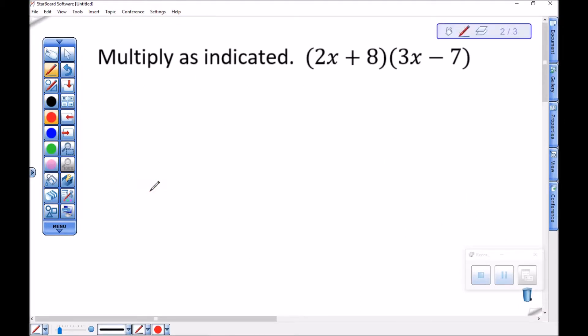Let's multiply 2x plus 8 times 3x minus 7. So for my first times first, I'm going to have 2x times 3x, and I'll write that here.